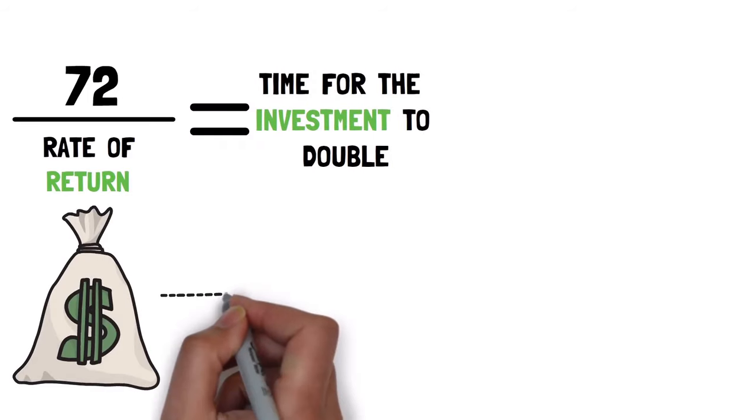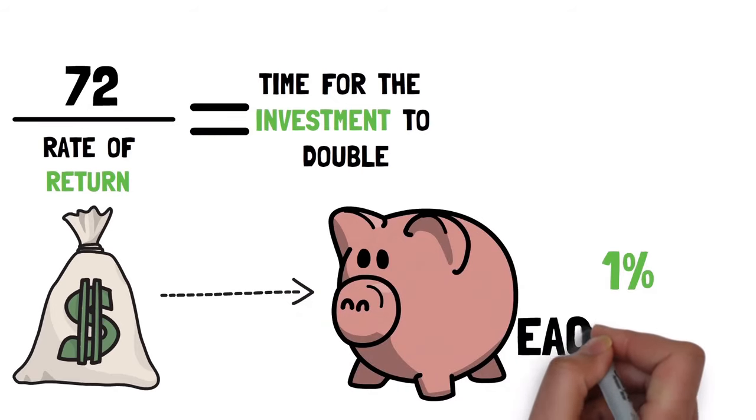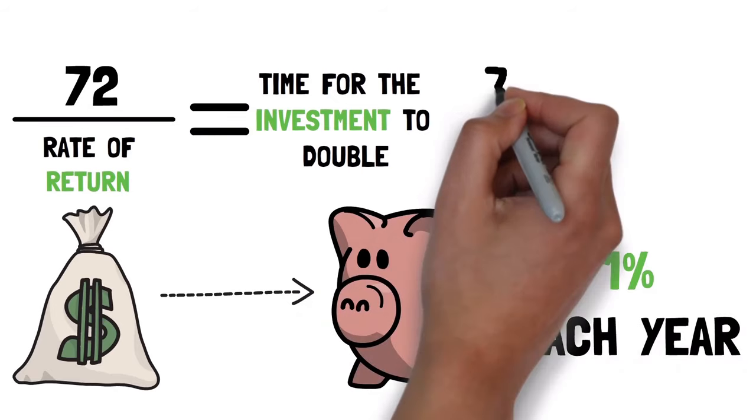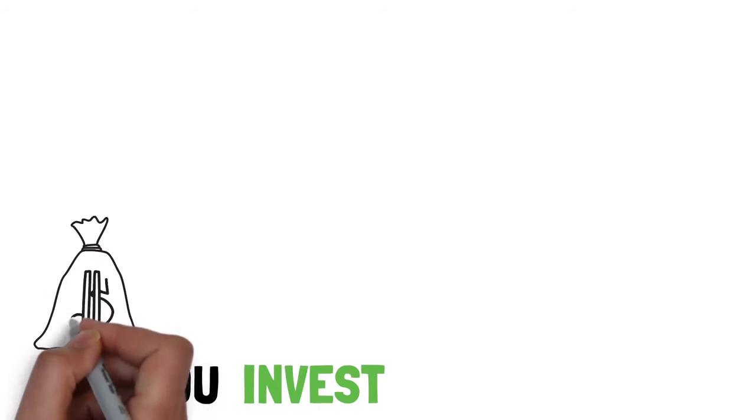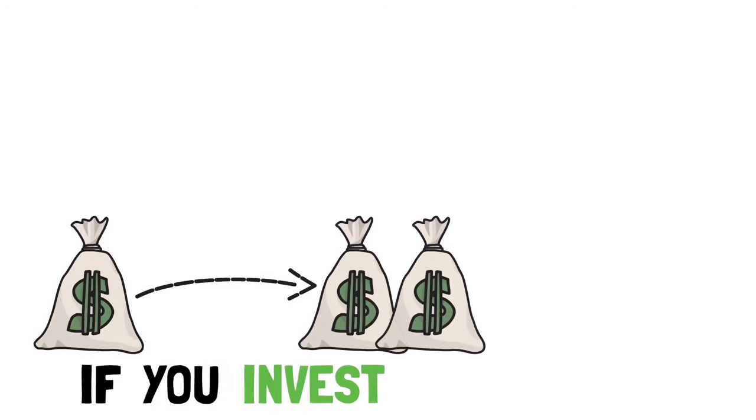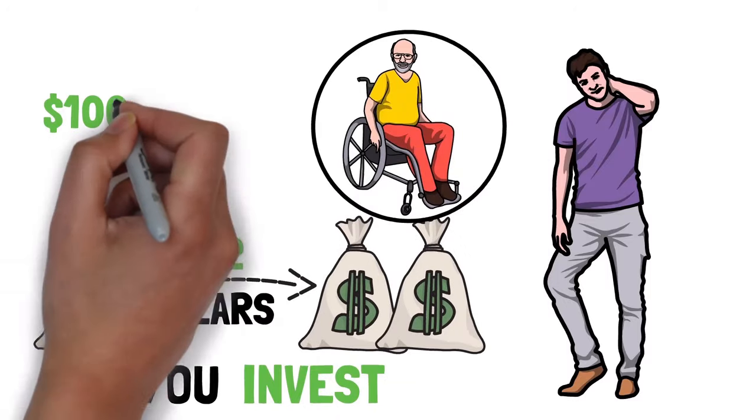72 divided by the rate of return equals time for the investment to double. For example, let's say you have $1,000 that you want to save in the bank. Assume you will earn a 1% interest rate each year. 72 divided by 1% is 72 years. That means that if you invest $1,000 today, you will have $2,000 in 72 years. But I doubt you'll be around in 72 years to get a $1,000 profit.